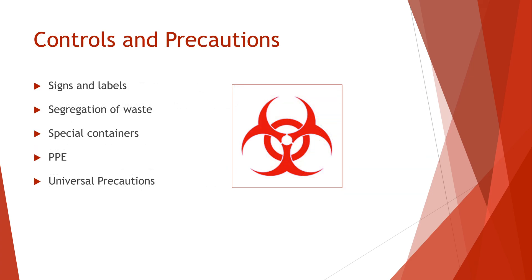An exposure control plan defines the controls and precautions used to avoid exposure to bloodborne pathogens. Sections of this plan include signs and labels, segregation of waste, special containers, personal protective equipment, and universal precautions for protection against bloodborne pathogens.